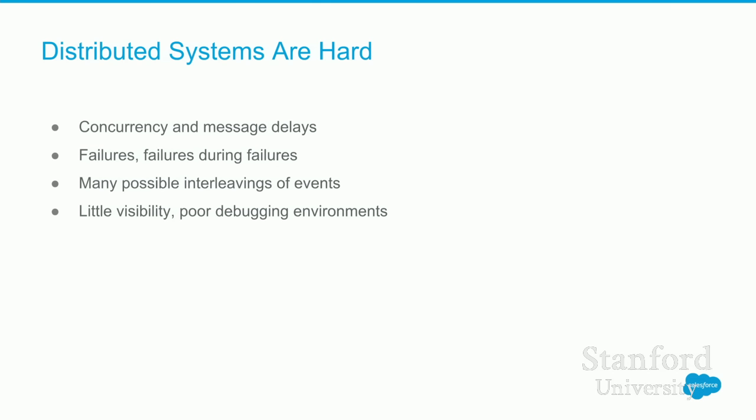Failures will come at inconvenient times. You can write out the good-case events in your system, but when you start injecting delays and failures, there are so many possible interleavings of what can happen — it's really hard to predict. And because these things are running across the network, we usually have little visibility into what's going on and poor debugging environments. You try to drop into GDB and suddenly there are timeouts and your failure detector fires.